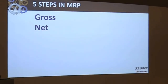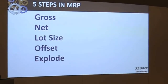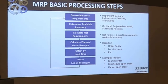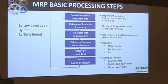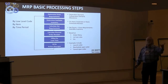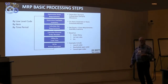There are basically five steps in MRP: gross, net, lot size, offset, and explode — the MRP dance. You determine gross requirements, determine available inventory on hand (that's why cycle counting is so important), calculate net requirements, calculate planned orders to satisfy those net requirements, offset by lead time, and write action messages. This is done by low-level code, by item, by time period. The low-level code tells the system to accumulate all gross requirements for a part number and then do the calculation.